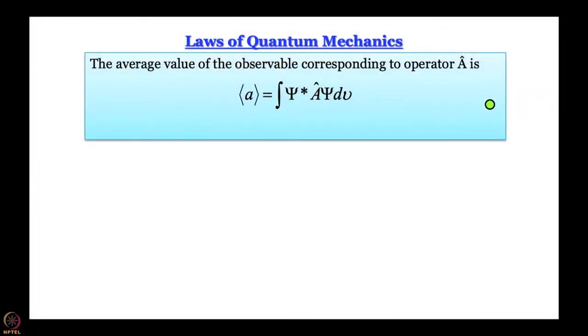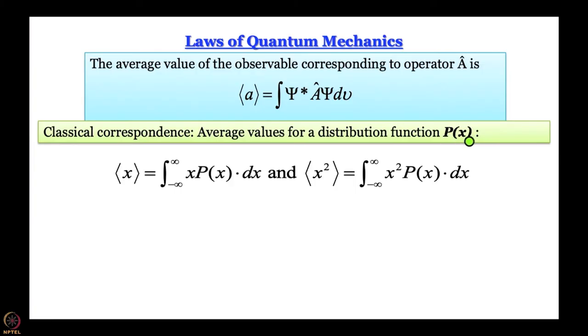That immediately opens up other aspects of quantum mechanical treatment and leads to the next postulate. The next postulate of quantum mechanics is that the average value of an observable corresponding to an operator is given by the integral ∫ψ* Â ψ dV. This comes from classical correspondence: in classical mechanics, if you have a population distribution function p(x) — Gaussian, Lorentzian, two-sided exponential — the average value of some property is given by integrating that property multiplied by the distribution over all space.